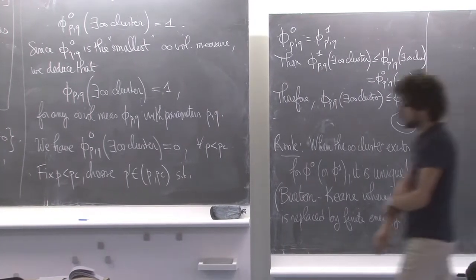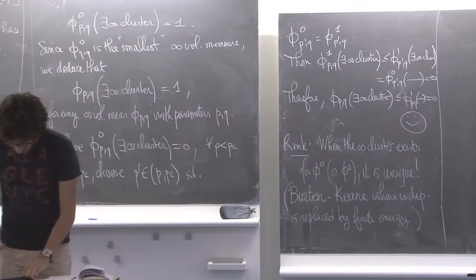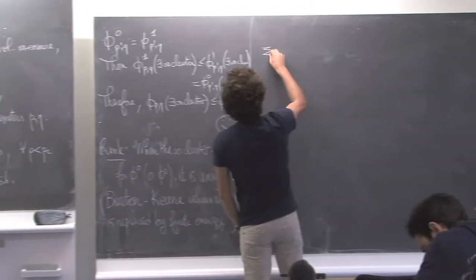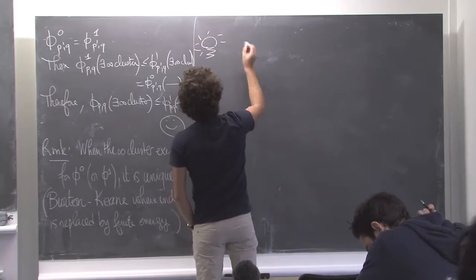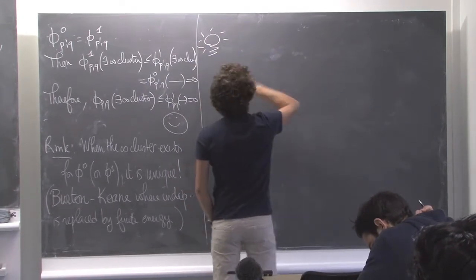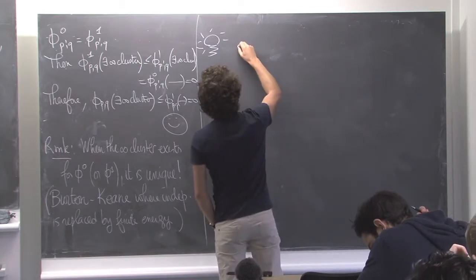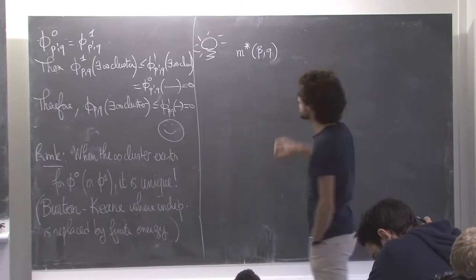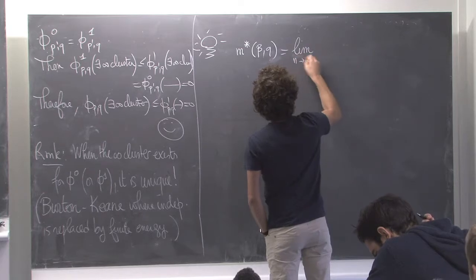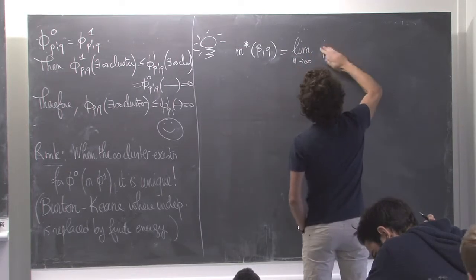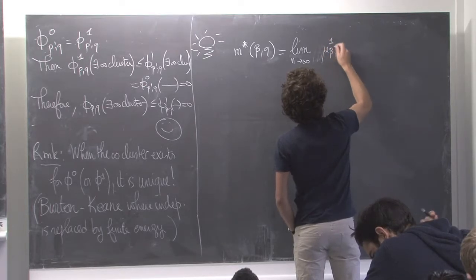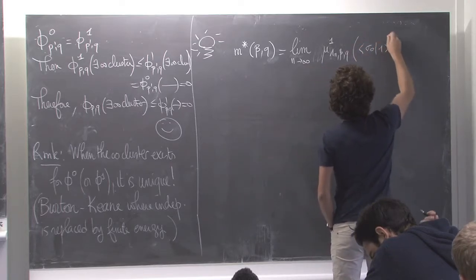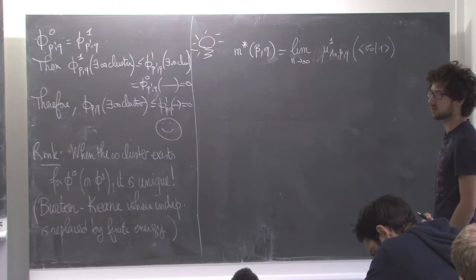So there is a critical point and it has all the properties you want. Just one remark to conclude: remember we said that spontaneous magnetization for the Potts model — which is the limit when n tends to infinity of mu^1_{beta, Lambda_n, beta, q} of sigma_0 being 1 — is how much the spin at 0 is aligned with the boundary conditions.